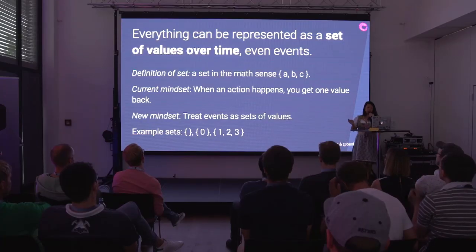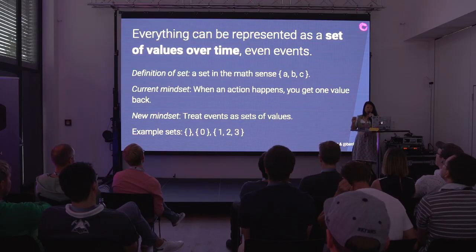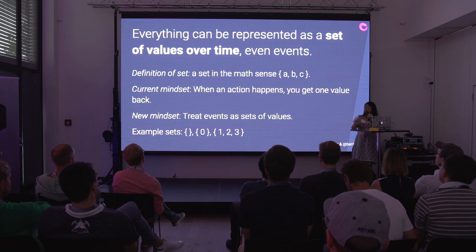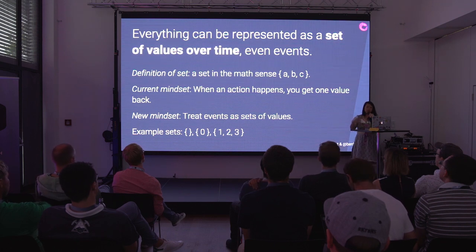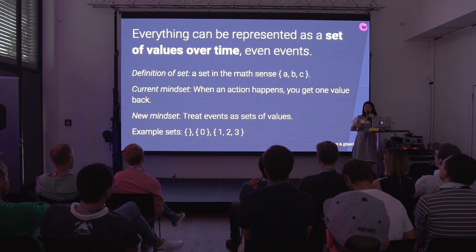Some people might say, 'but isn't that just streams?' When we're talking about a set of values over time, we're talking about set in the math sense — you can have a set of A, B, and C. The current mindset is typically that when an action happens, one thing happened. But the new mindset should be: start treating events as sets of values. Example sets could be an empty set, a set of zero, or a normal set.